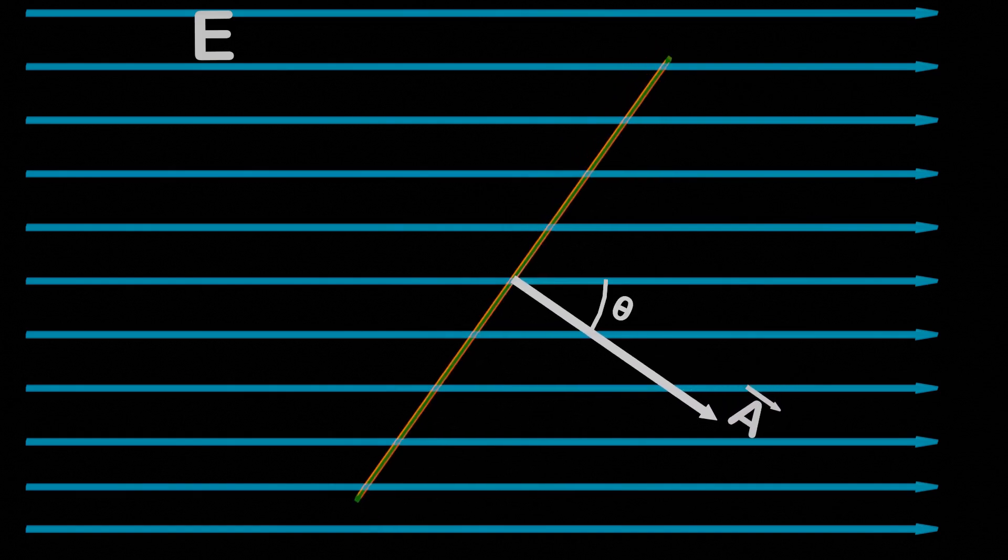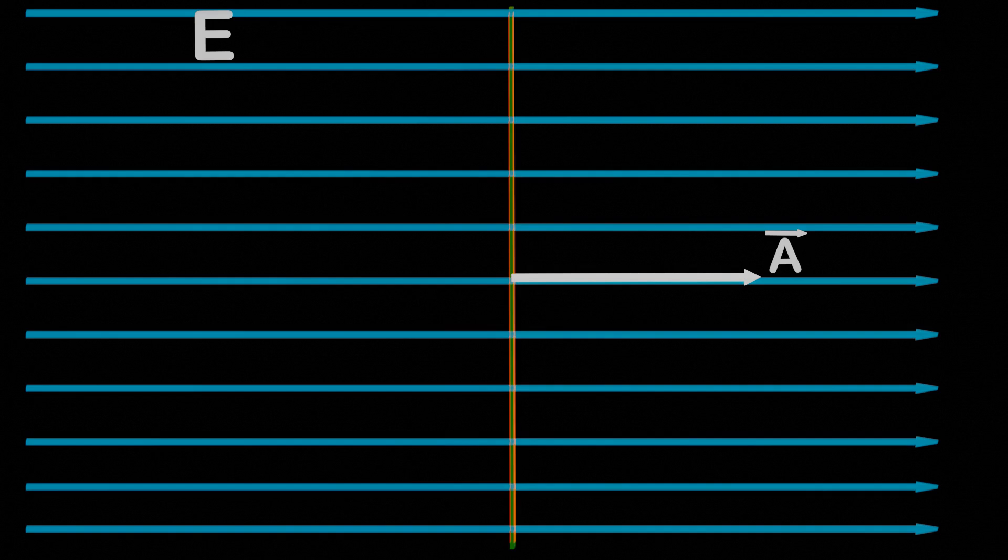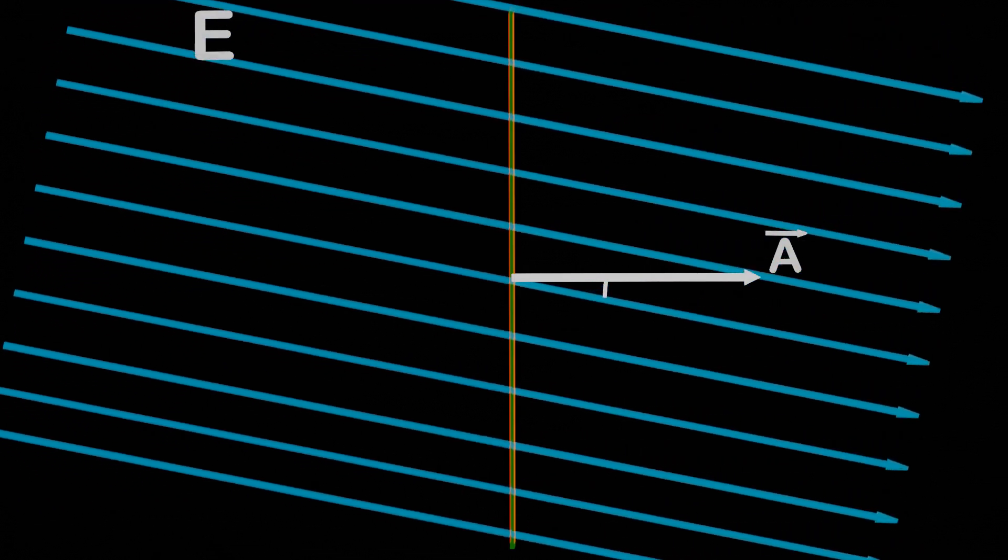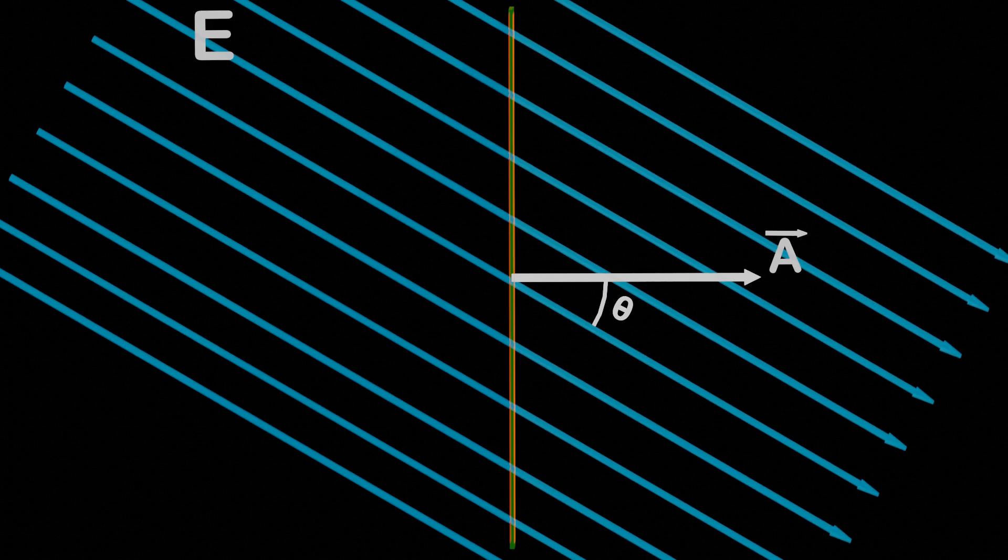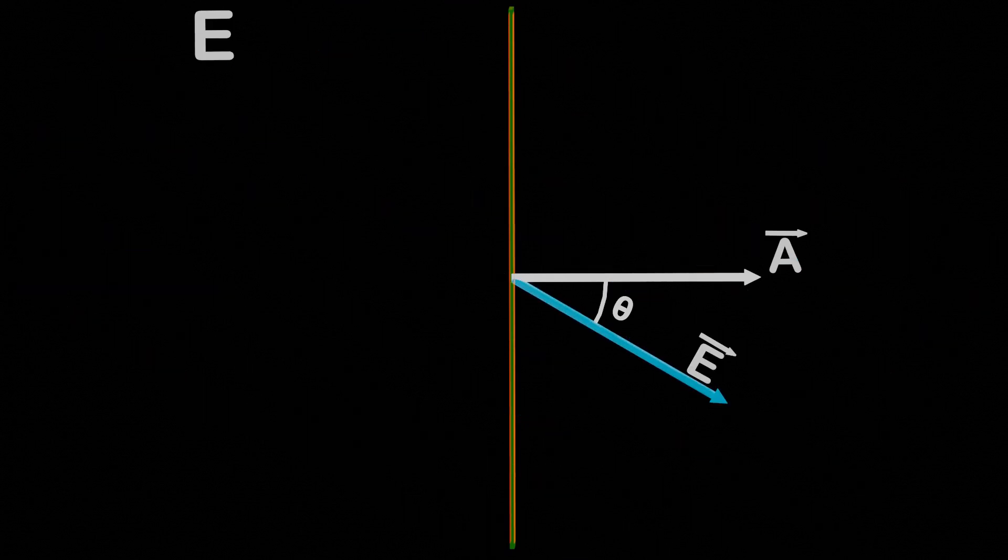Furthermore, if we do not rotate the plane, but instead pass the electric field through the plane at a certain angle, we can still calculate the angle theta between the electric field and the area vector. By defining the area vector, it becomes easy to understand the orientation of the surface with respect to the electric field.